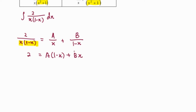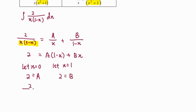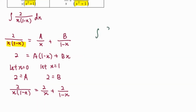To find A and B, let x equal 0 to get A, then let x equal 1 to get B. Therefore these fractions can be expressed as 2 over x — where A is 2 — plus 2 over (1-x), where B is also 2. Now we can integrate: the integral of 2 over x(1-x) dx equals the integral of 2 over x plus 2 over (1-x) dx.